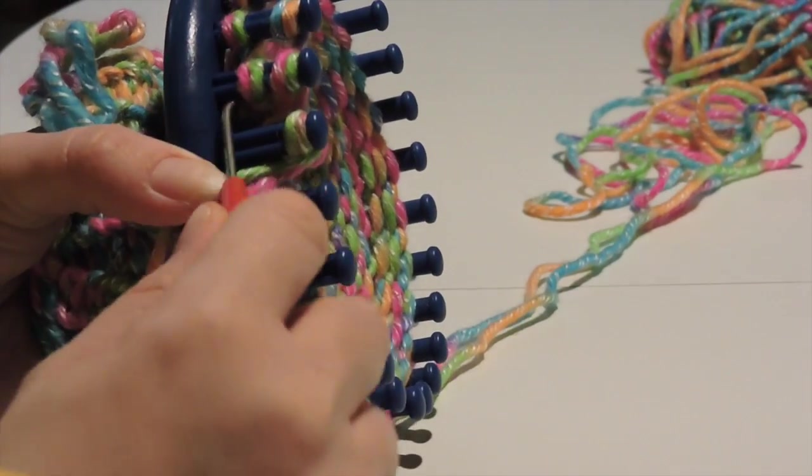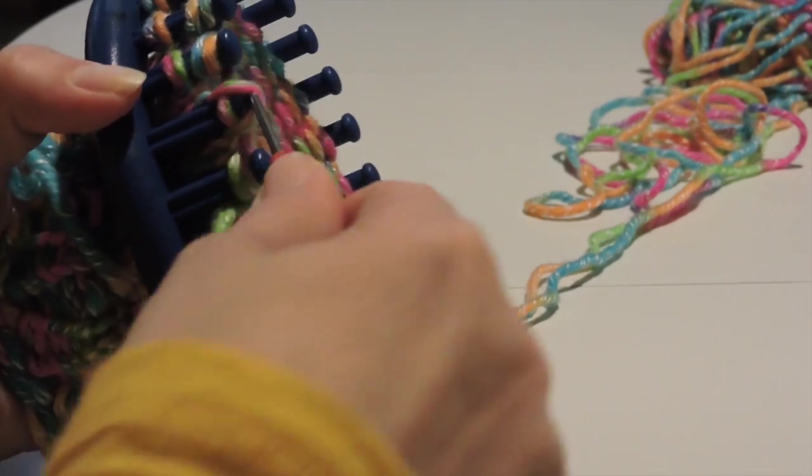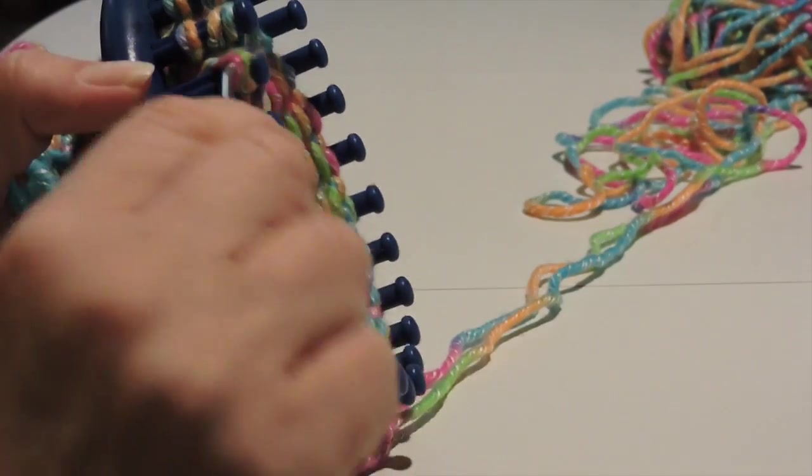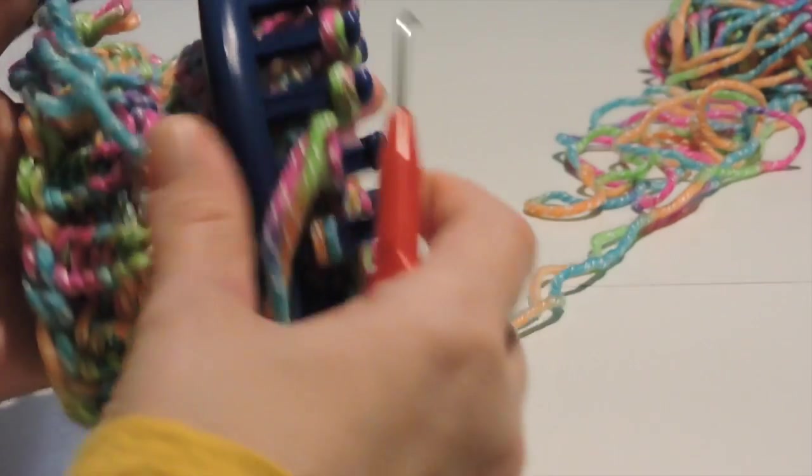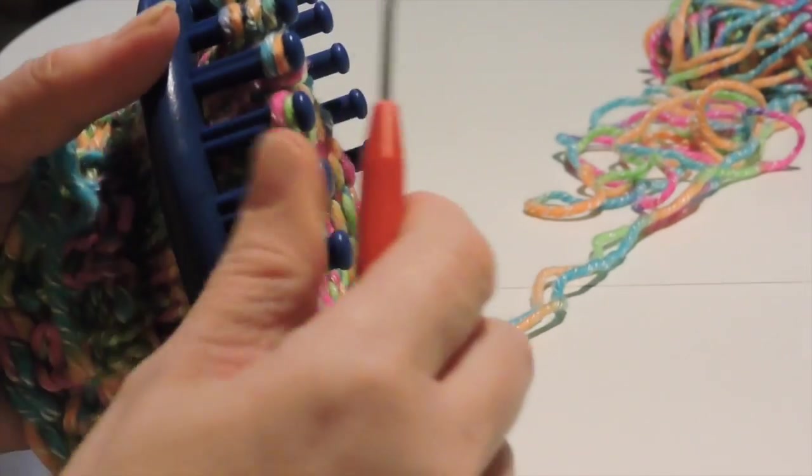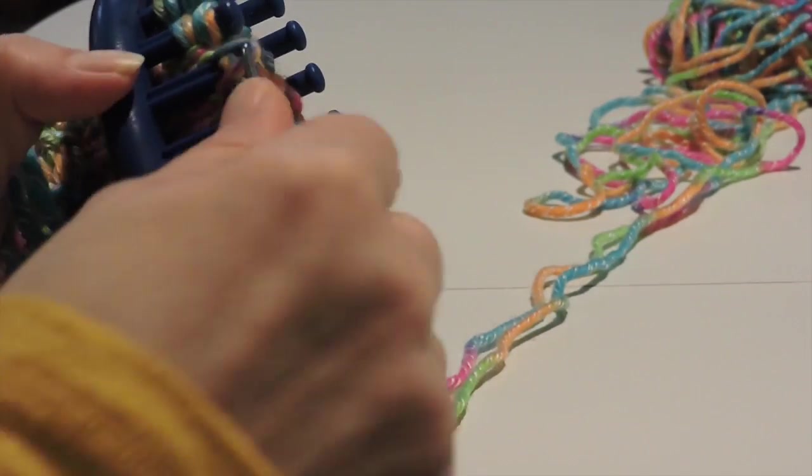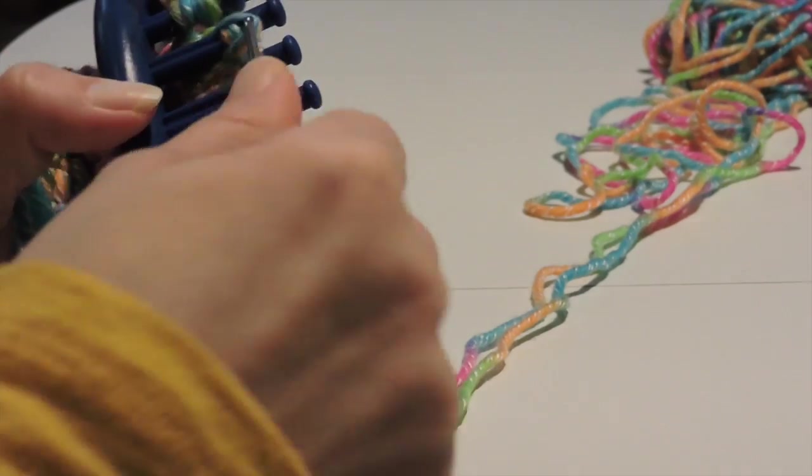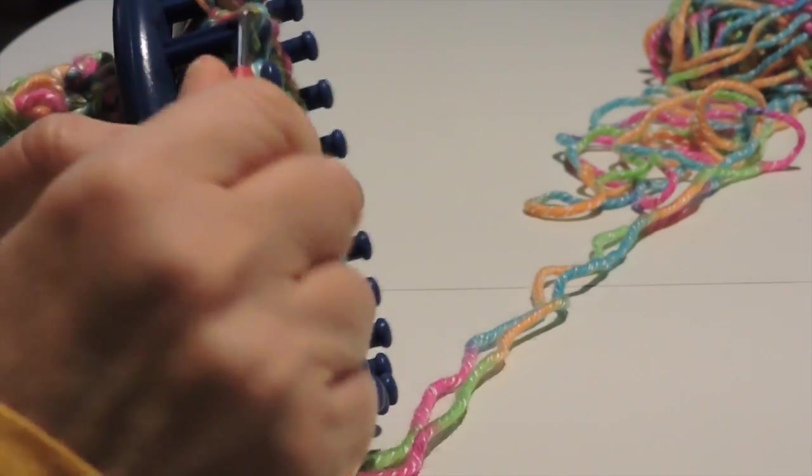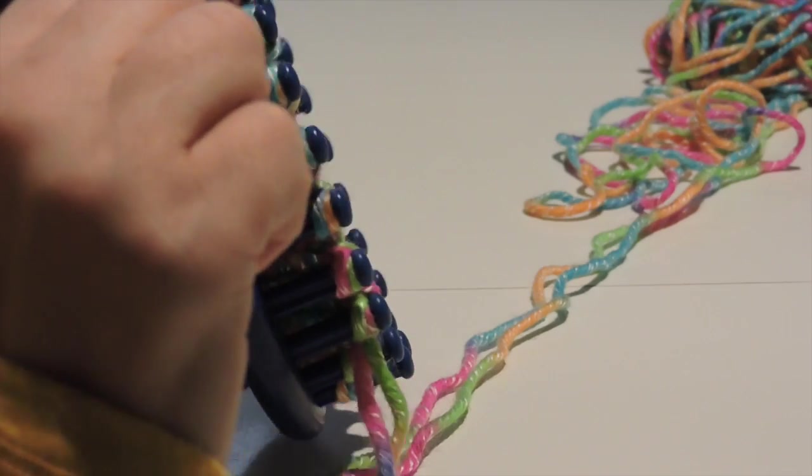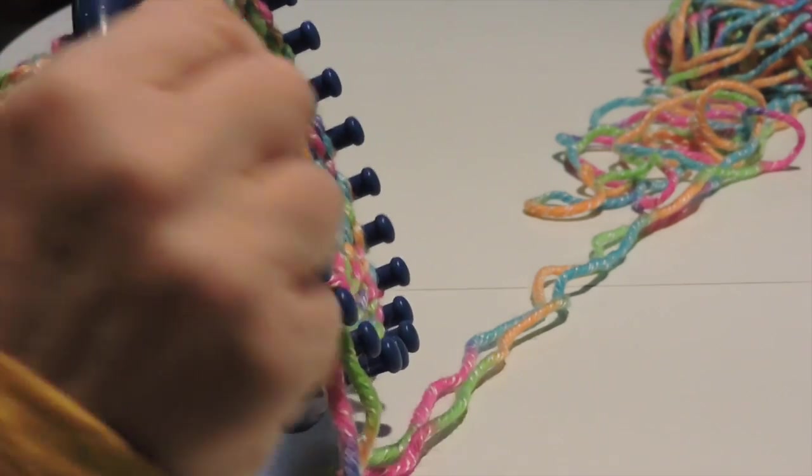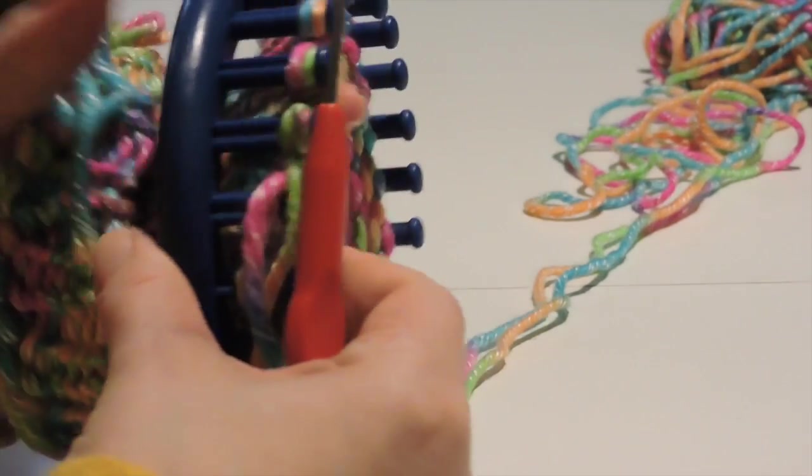When you get to the seventh peg, you'll want to E-wrap that over from the bottom, the bottom loop over the top, bottom over the top.